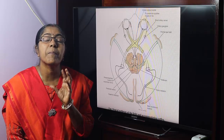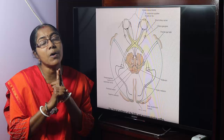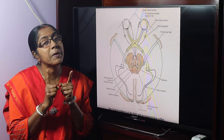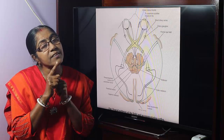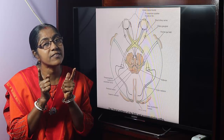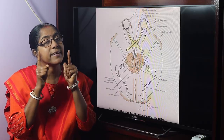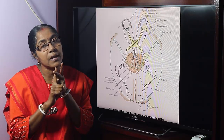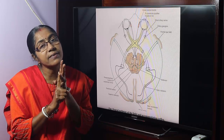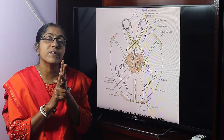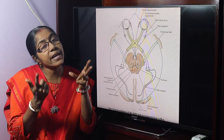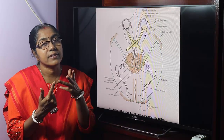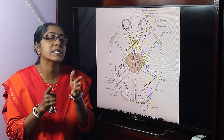Now what are the component parts of the accommodation reflex? Number one: convergence of the ocular axis, which occurs by contraction of the medial rectus muscle. Number two: constriction of the pupil. Number three: contraction of the ciliary muscle, which causes the suspensory ligament to relax and produces increased curvature of the lens. These are the four components of the accommodation reflex.